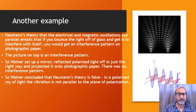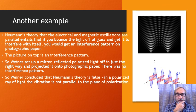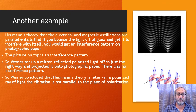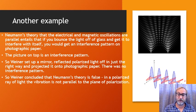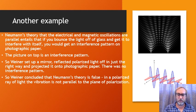Wiener set up a mirror, did the reflection experiment, projected the result onto photographic paper, and didn't see the predicted pattern. This looks like a straightforward falsification: Wiener concluded that Neumann's theory is false, and the vibrations are not parallel to the plane of polarization — they're perpendicular. So does this mean Popper is right? Duhem has a bit more to say about it.